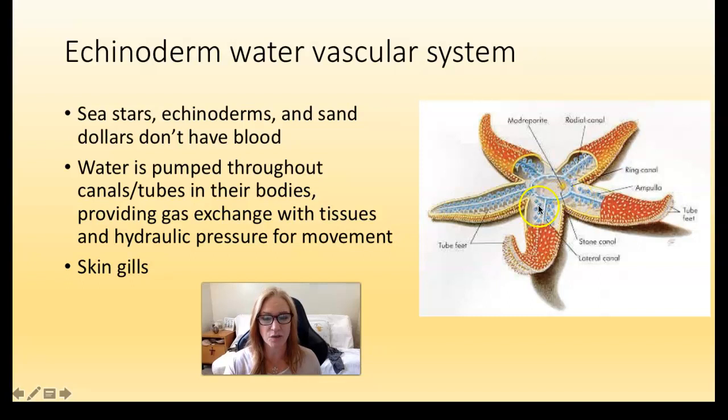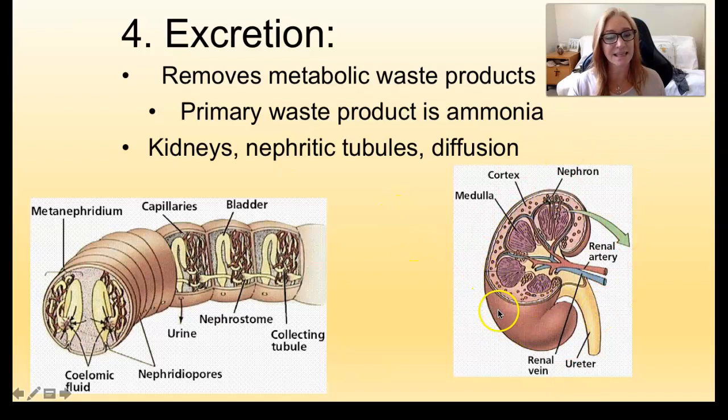Excretion: the byproducts of metabolism are mostly nitrogenous waste — ammonia, nitrates, nitrites — and those are toxic, throwing off your pH. We have to filter the blood in an animal body to get rid of that ammonia waste. In vertebrates we have kidneys of different styles depending on the class of vertebrate. Invertebrates can have metanephridia, nephridia, and flame cells.